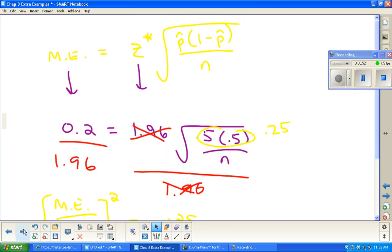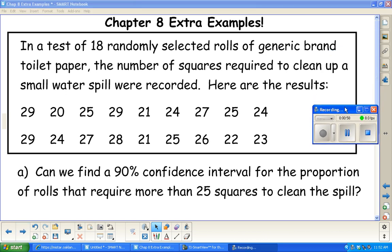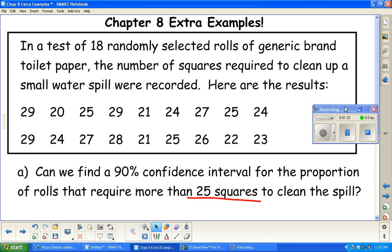I did want to set up another example here, running through a little sample problem. Let's say we have done a test on 18 randomly selected rolls of generic brand toilet paper, and we counted the number of squares required to clean up a small water spill. We have 18 different little tests. The first test took 29 squares to clean up the water. The second test took 20 squares, and so on.